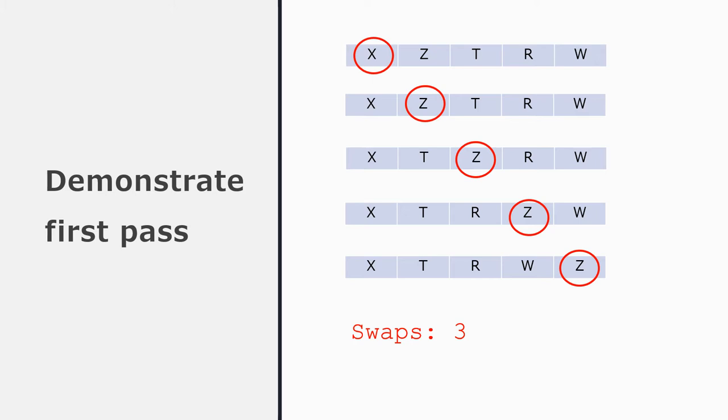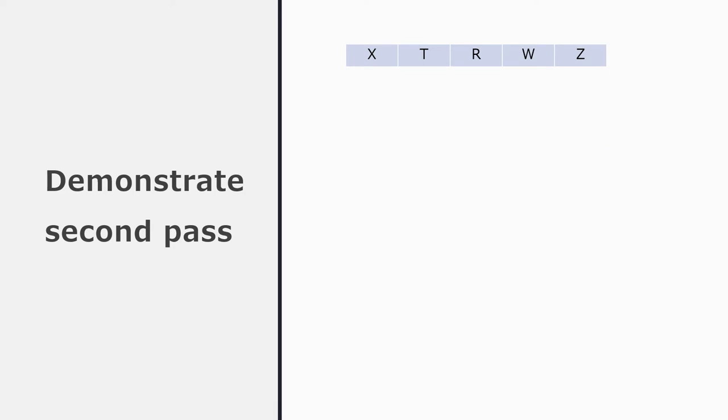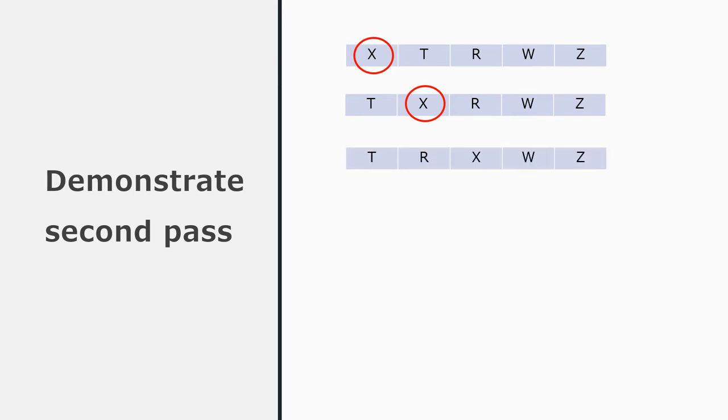There have been three swaps altogether. The list is now X, T, R, W, Z. Clearly it is not yet sorted, so we need to traverse it again. The counter begins at the start of the list. X compared to T — they're the wrong way round, so they swap: T, R, X. The counter moves on. Now compare to the element that follows: X compared to R — wrong way round, so swap them: T, R, X. The counter moves on.